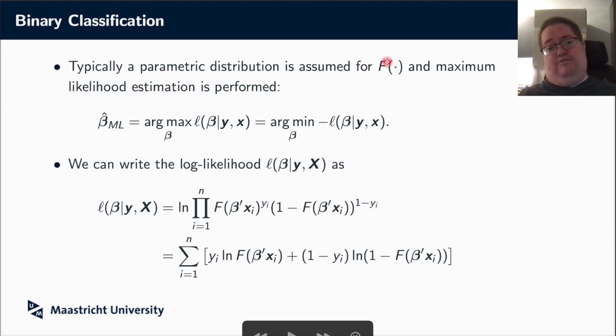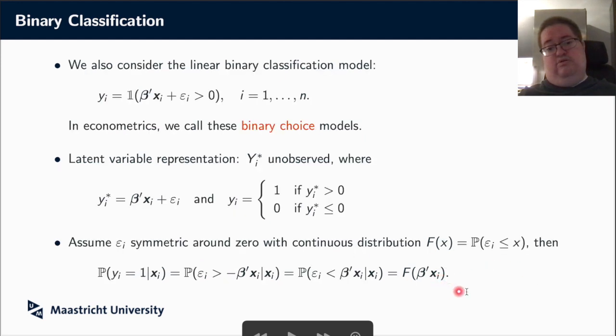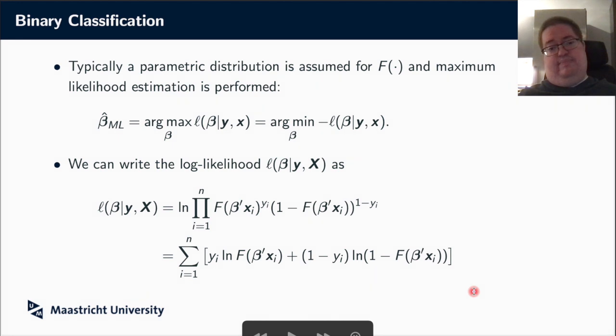So what we typically do to solve that problem is assume a parametric distribution for f. Because in that case, we can do maximum likelihood estimation. So we write down the log likelihood and then solve for the beta that maximizes that log likelihood. Well, in this particular case, our log likelihood is very simple because it's the product of the probability that that particular y is actually 1 or 0. And that thing just has a Bernoulli distribution. And the probability that it's 1 is, of course, just equal, as we saw here, to f of beta prime x. So it's just f to the power y times 1 minus f to the power 1 minus y.